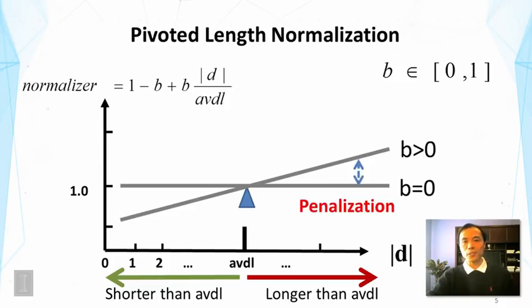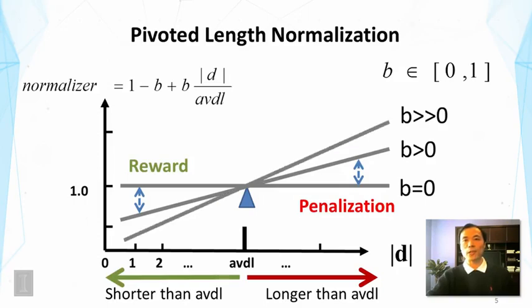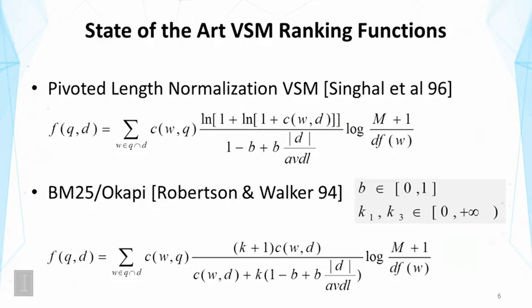If we set B to a non-zero value, the normalizer would be higher for documents longer than the average document length, meaning there is penalization for long documents, and the normalizer would be smaller for shorter documents, meaning there is a reward for short documents. The degree of penalization is controlled by B: if we set B to a larger value, there is even more penalization for long documents and more reward for short documents. By adjusting B — which varies from zero to one — we can control the degree of length normalization.